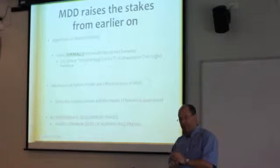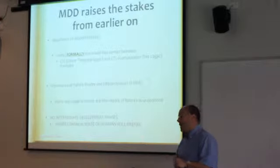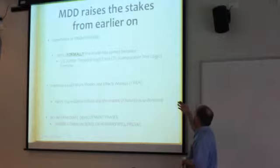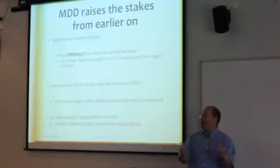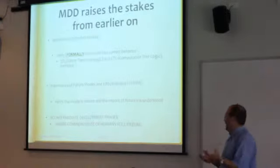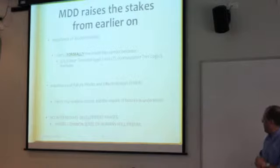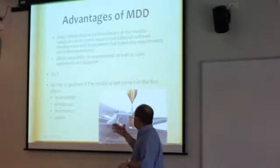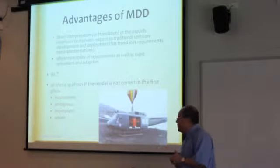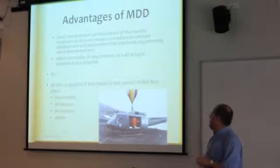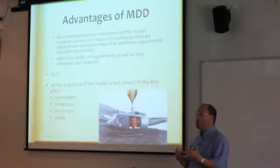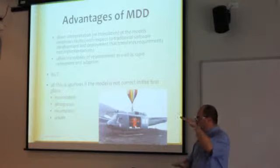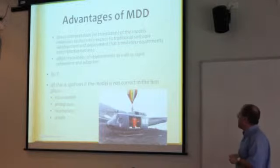The important thing is to check that your model is not inconsistent, not ambiguous, not incomplete, and not unsafe — as usually happens with a description of requirements in natural language. You don't want the kind of scenario where somebody has a model of a helicopter that goes up with a balloon or something like that. Checking these properties is essential.